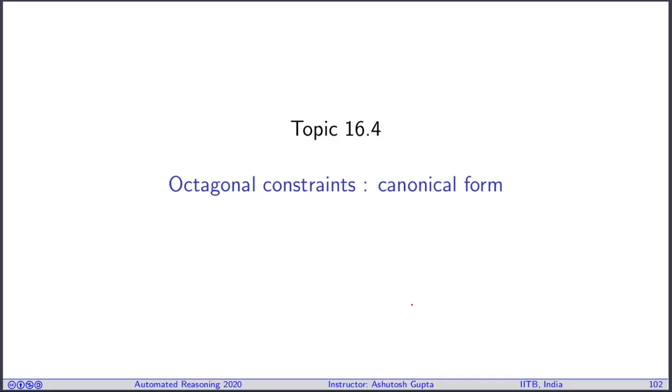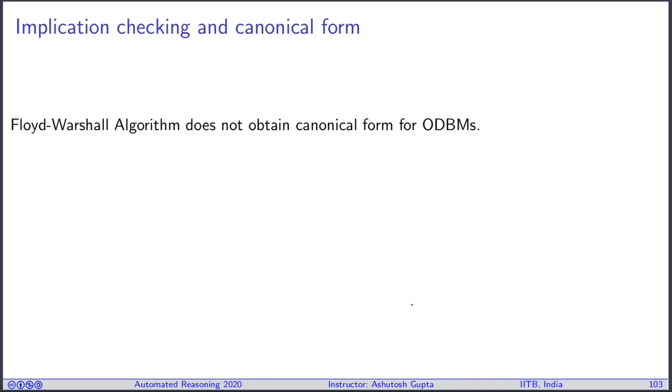Now we look at the canonical form for the octagonal construct. The algorithm we use to find satisfiability for ODBMs does not produce a canonical form because it does not implement the equality between the negative representation of the variable and the positive representation of the variable. Therefore, we don't have a canonical form.